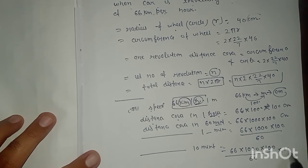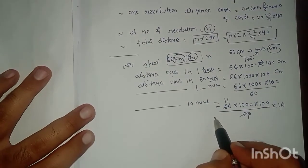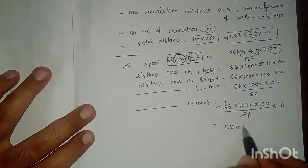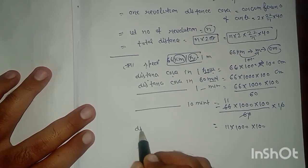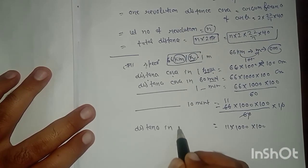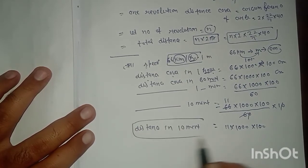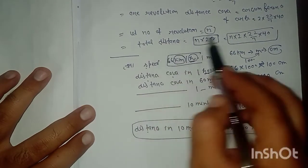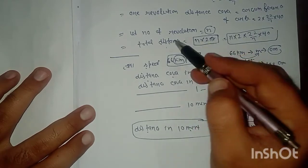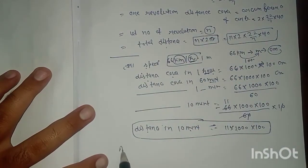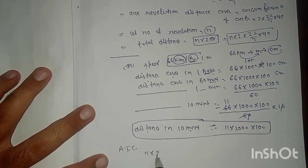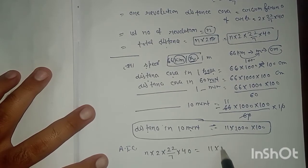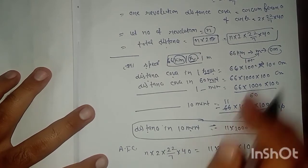Distance in 10 minutes equals the wheel distance. According to the condition: n × 22/7 × 40 = 11 × 1000 × 100.